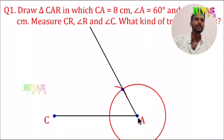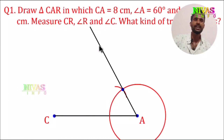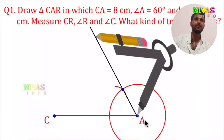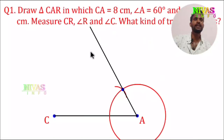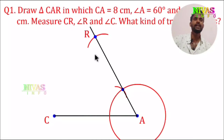Next, we draw the line from A at 60 degrees. We draw the line and mark point R on it at 8 cm. Now R and C are connected, and the triangle is ready.